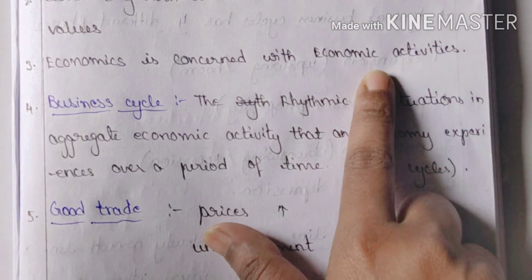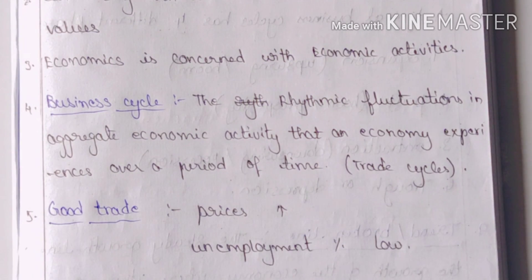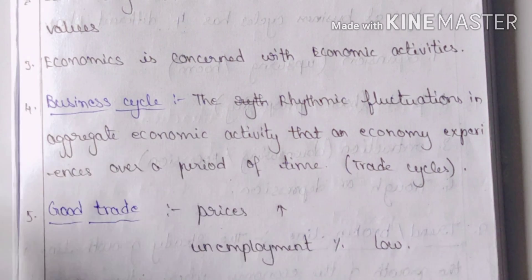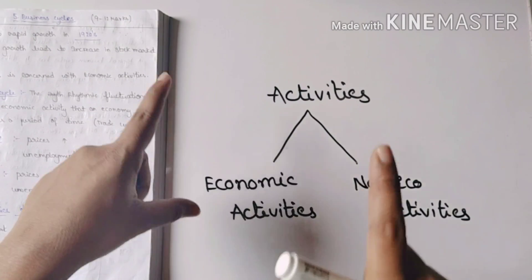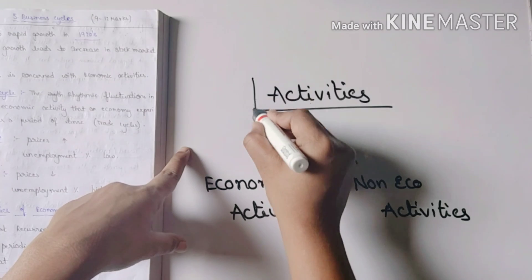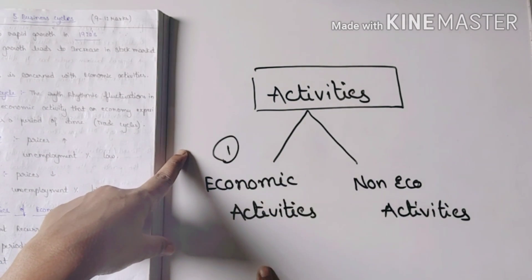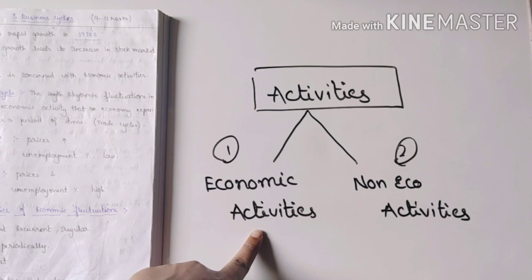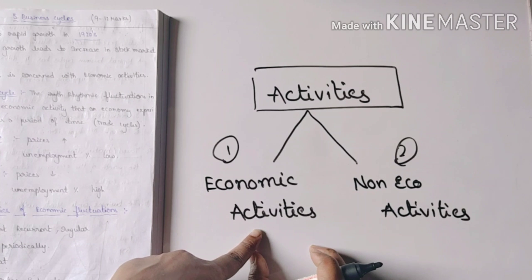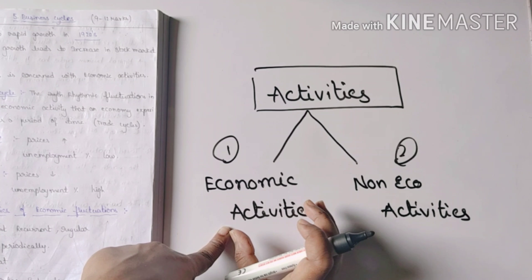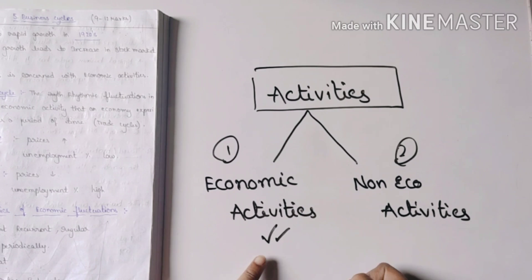Economics is concerned with economic activities. Economic activities means profit. We choose activities — there are two types: economic activities and non-economic activities. Economic activities are those where we do some work and there is a return.